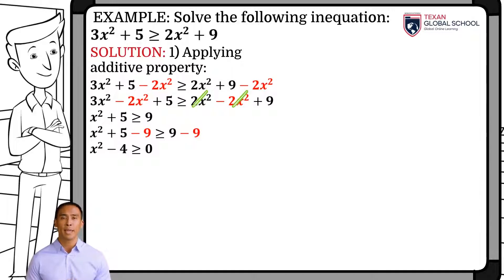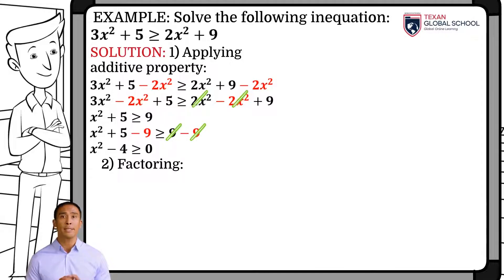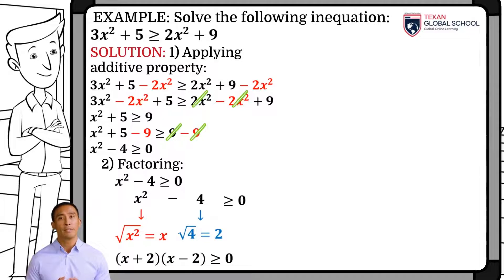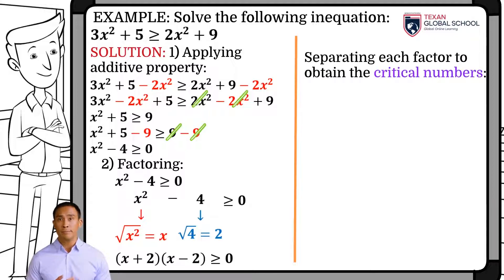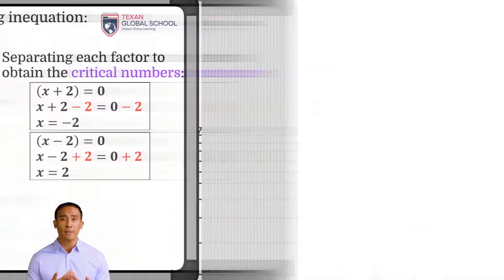We cancel the 2x squared and the 9 on the right side. Adding like terms results x squared minus 4 greater than or equal to zero. We can see that we have a difference of squares, which factors as conjugate binomials. So x squared minus 4, when calculating the roots and substituting in the conjugate binomials, is factored as (x + 2)(x − 2), greater than or equal to zero. Hence, by setting each factor equal to zero, we obtain the zeros, also called critical numbers: x is equal to negative 2 and x is equal to 2. Once the critical numbers are obtained, we will analyze the solution interval.